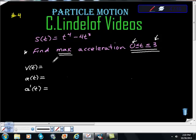So the first derivative here is 4T cubed minus 12T squared. The second derivative, which gives us acceleration, is 12T squared minus 24T.